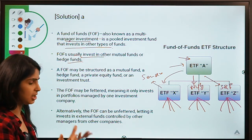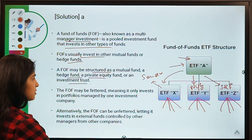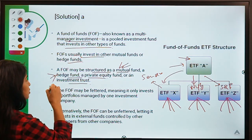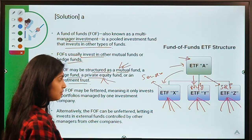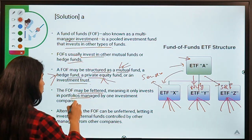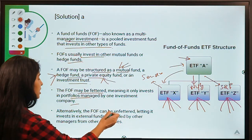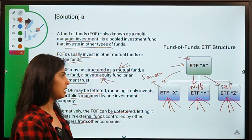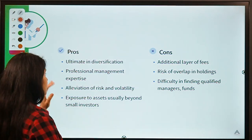FoFs usually invest in other mutual funds or hedge funds. They may be structured as a mutual fund, hedge fund, private equity fund, or investment interest. A FoF can be 'fettered' — meaning it only invests in portfolios managed by one investment company — or 'unfettered' if it invests in external funds controlled by managers from other companies.